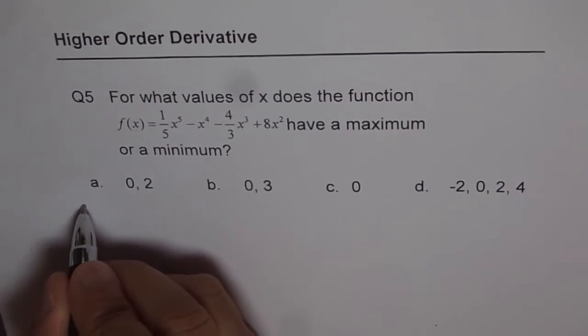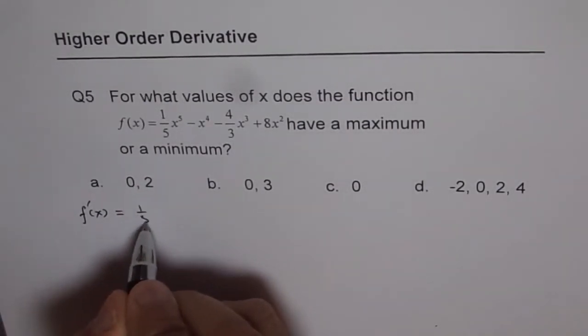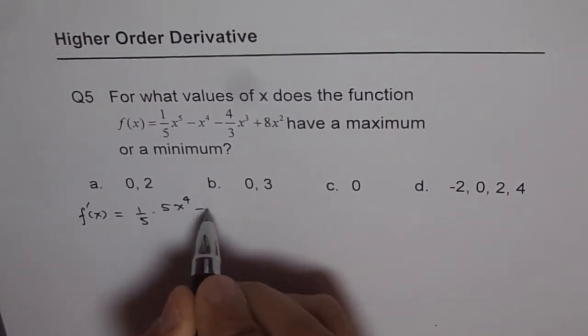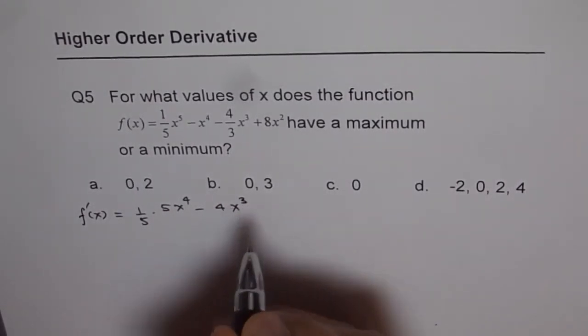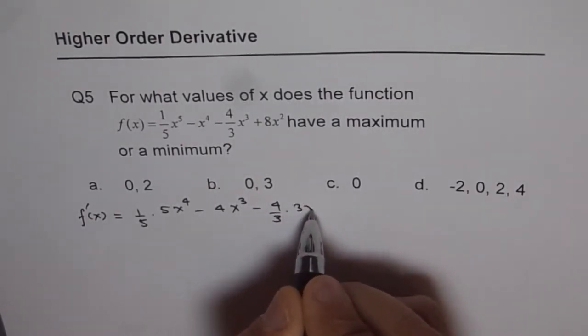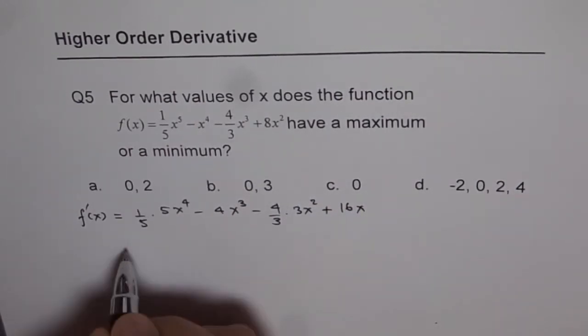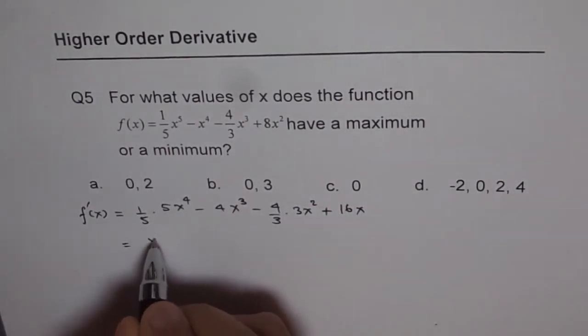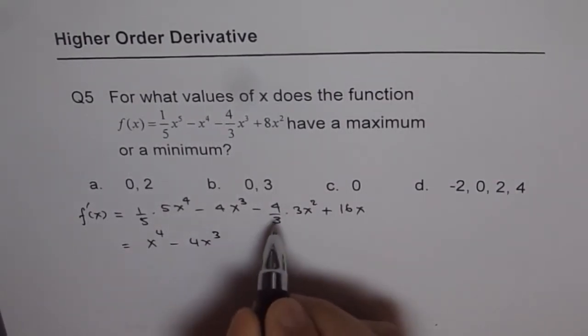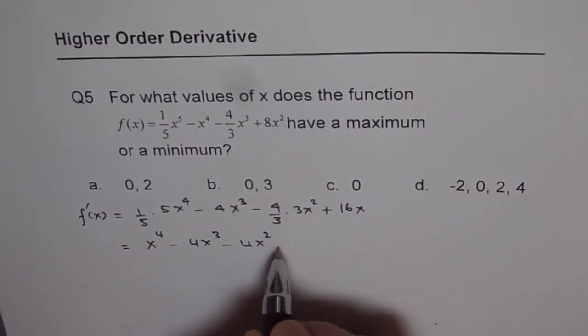Let's find the derivative of the function which is f'(x) = (1/5)(5x^4) - 4x^3 - (4/3)(3x^2) + 16x. Let's simplify this a bit. We get x^4 - 4x^3 - 4x^2 + 16x.